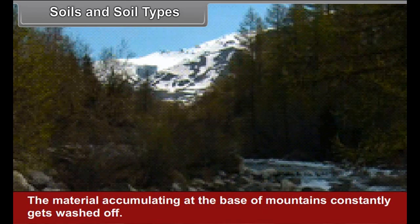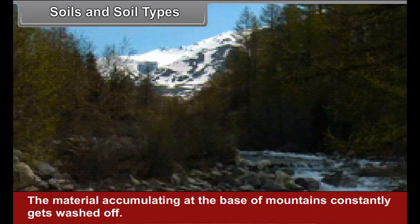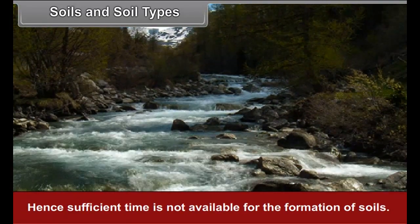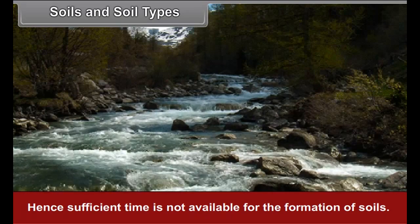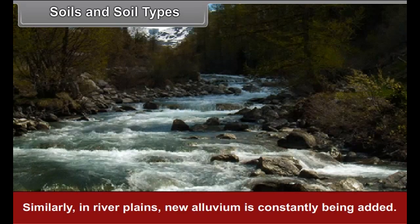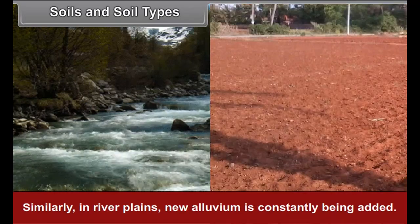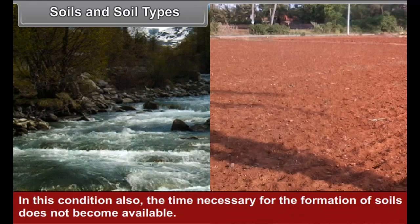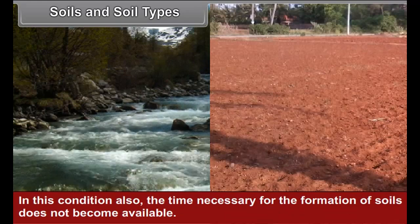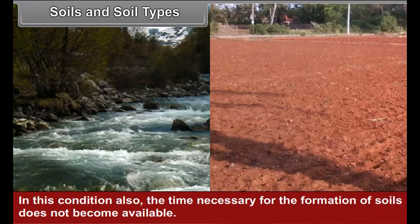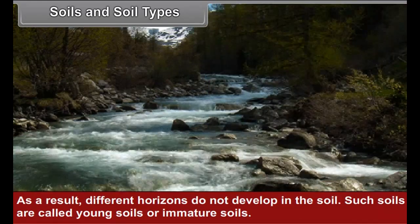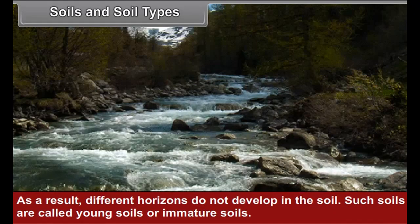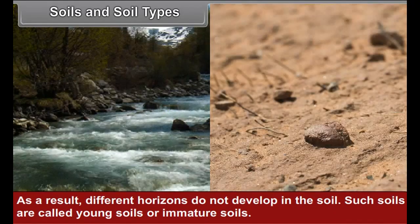The material accumulating at the base of mountains constantly gets washed off; hence, sufficient time is not available for the formation of soils. Similarly, in river plains, new alluvium is constantly being added. In this condition also, the time necessary for the formation of soils does not become available. As a result, different horizons do not develop in the soil. Such soils are called young soils or immature soils.